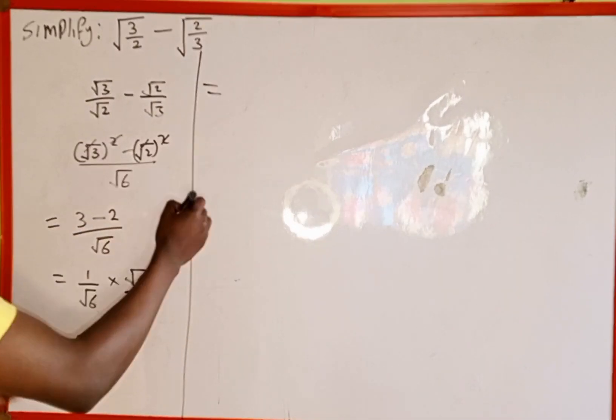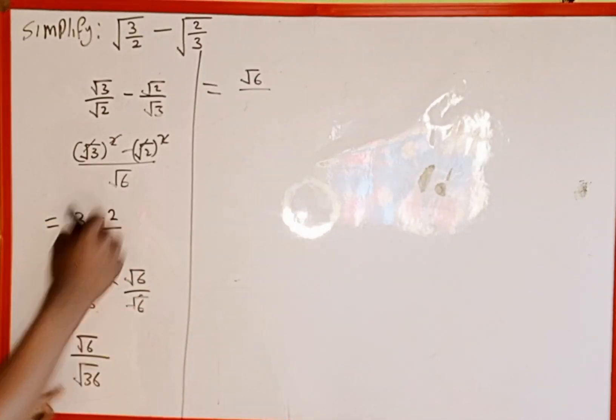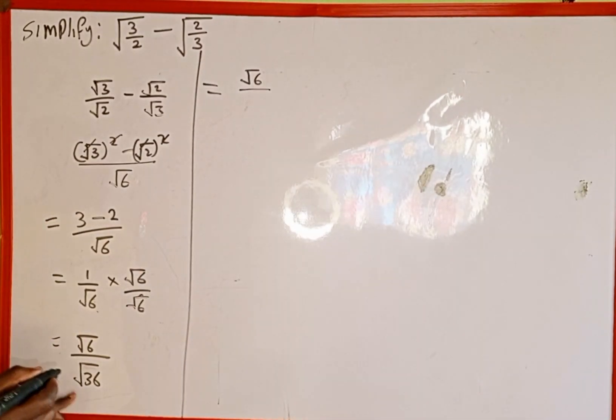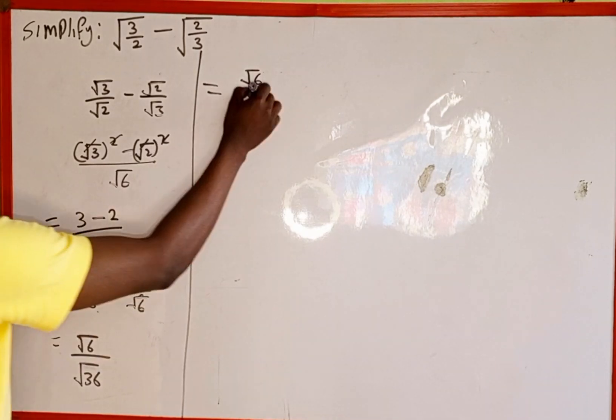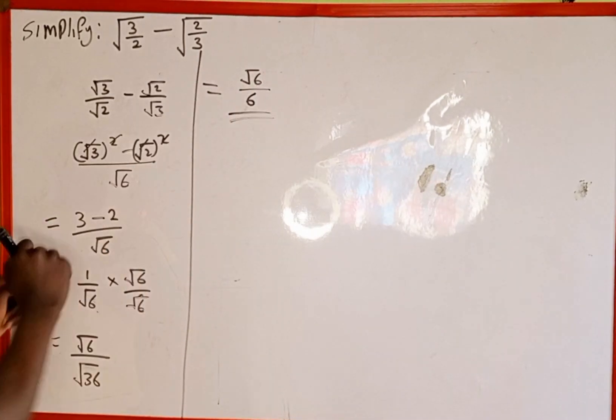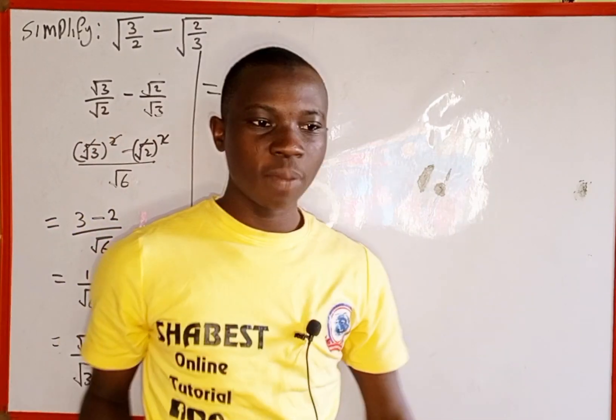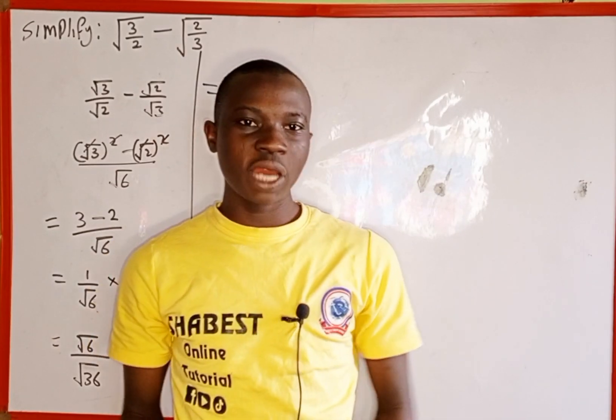So this is going to be √6 divided by √36. √36 is a perfect square, and if you take the square root of 36 it is going to give us 6. And here is the simplification of this surdic expression. Thank you for watching and please follow and subscribe for more videos like this.